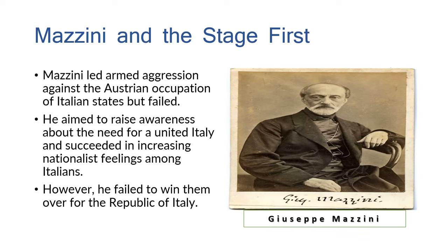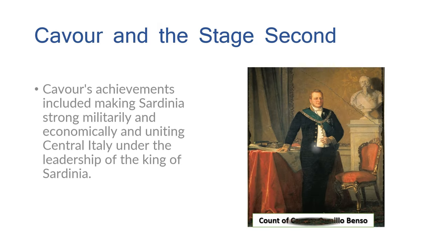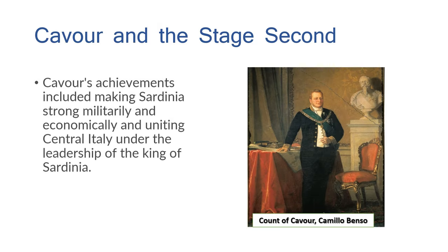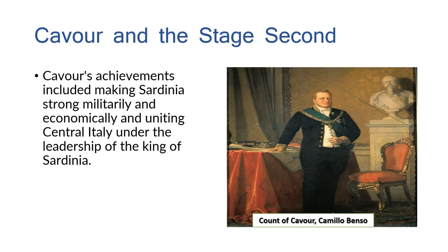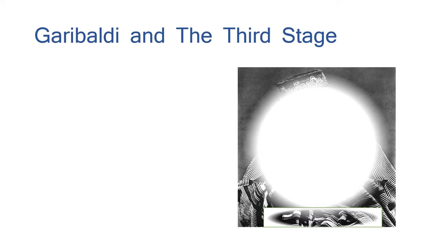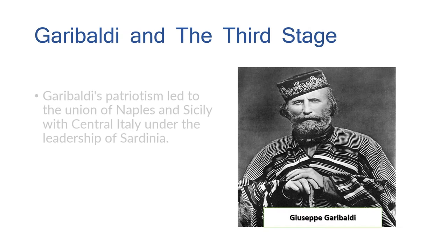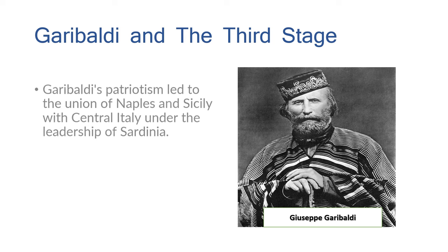Stage two — Camillo Benzo, the Count of Cavour: Cavour's achievements included making Sardinia strong militarily and economically and uniting central Italy under the leadership of the King of Sardinia. Stage three — Giuseppe Garibaldi: Garibaldi's patriotism led to the union of Naples and Sicily with central Italy under the leadership of Sardinia.